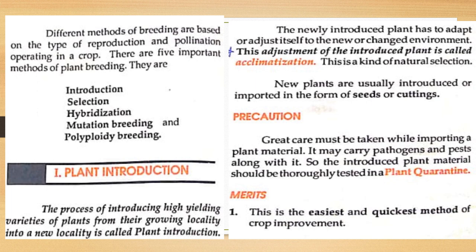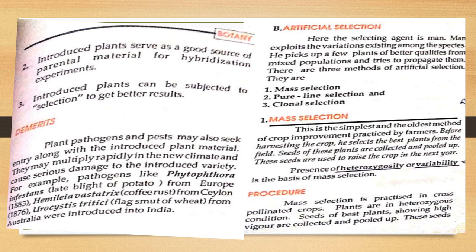The introduced plant material should be thoroughly tested in plant quarantine. Merits: this is the earliest and quickest method of crop improvement; introduced plants serve as a good source of parental material for hybridization experiments; and introduced plants can be subjected to selection for better results. Demerits: plant pathogens and pests may also enter along with introduced plant material and may multiply rapidly in the new climate, causing serious damage. For example, the pathogen Phytophthora infestans, which caused the late blight of potato, was introduced to India from Europe.